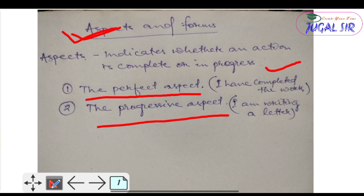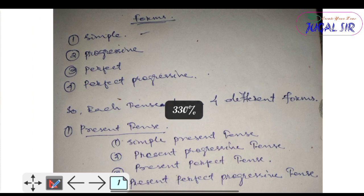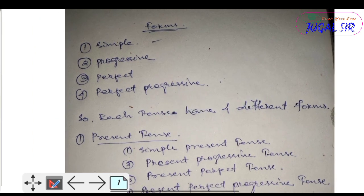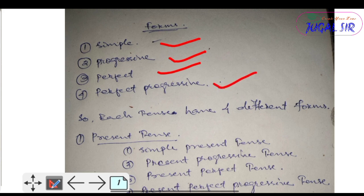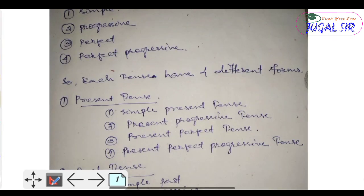So in English tense you will find two aspects: the perfect aspect and the progressive aspect. Now let's discuss the forms of tense. In tense there are four forms: simple, progressive, perfect, and perfect progressive. With three tenses — present, past, and future — these four forms create a total of 12 forms.